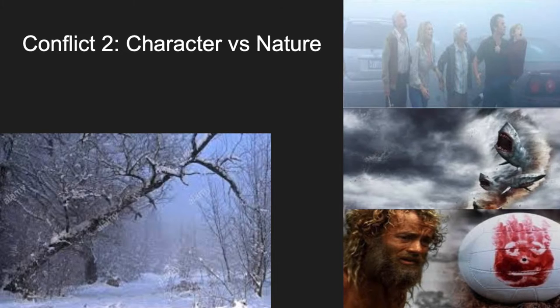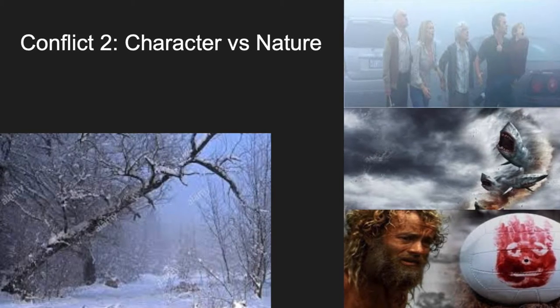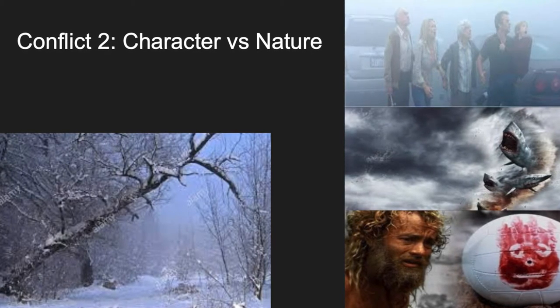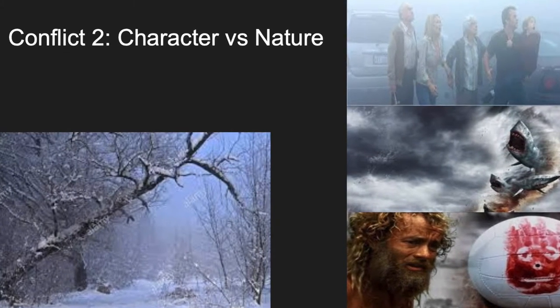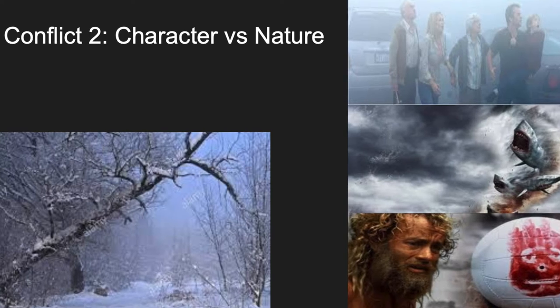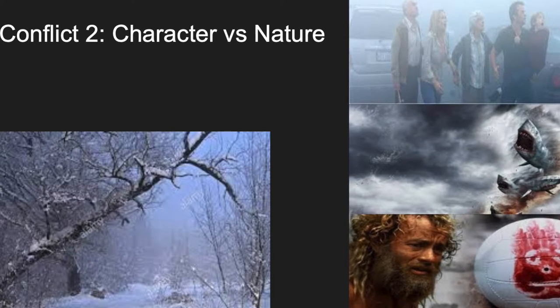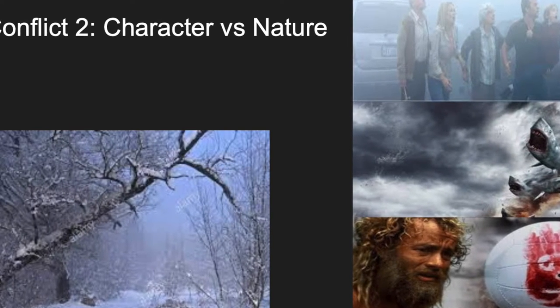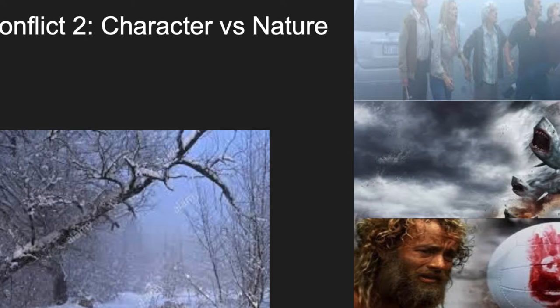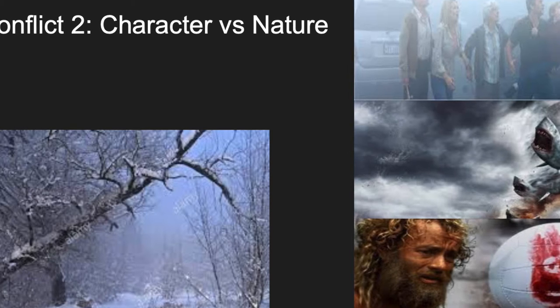The next conflict we are going to discuss is the character versus nature conflict shown throughout the novel. We've got some more examples on the right: Castaway, The Mist, and the masterpiece of a film known as Sharknado.